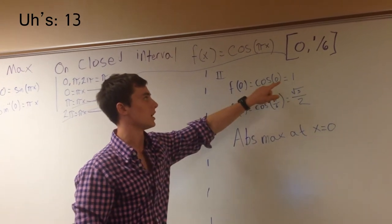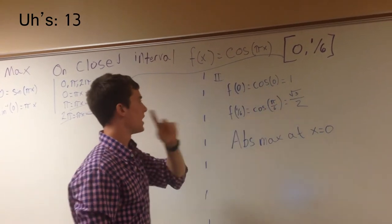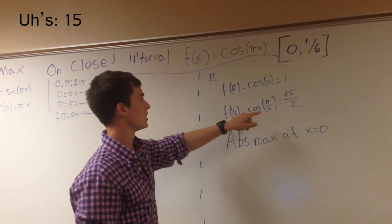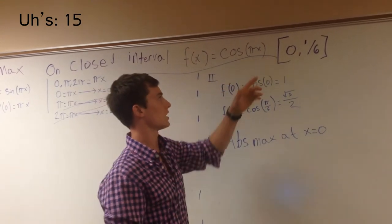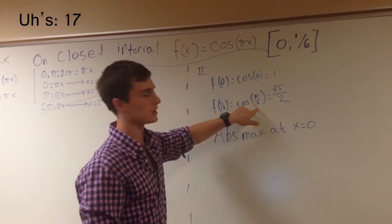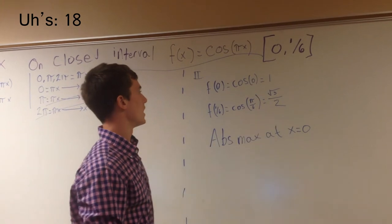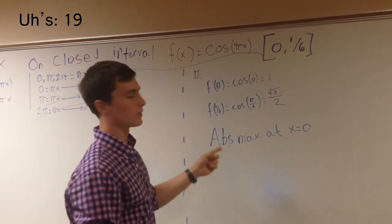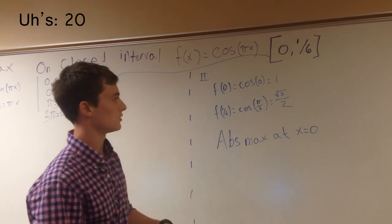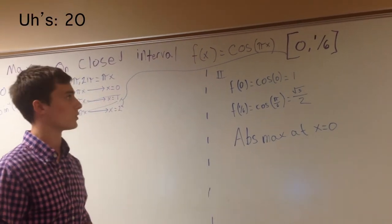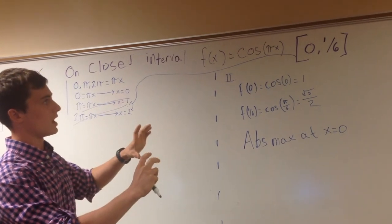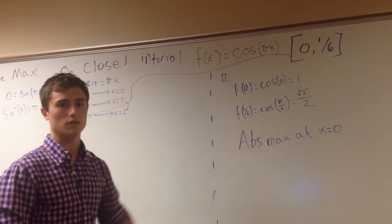You plug in zero, and you're going to get cosine of zero, which is one. You plug in cosine of pi over six, which is, remember, cosine of pi x, so cosine times pi times one-sixth is going to be cosine pi over six, and you're going to get root three over two. So, root three over two is less than one. So, f of zero is the absolute max. The absolute max for this equation on the given interval, zero to one-sixth, is at x equals zero.